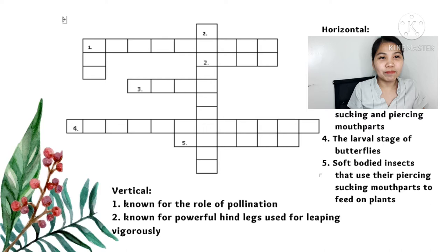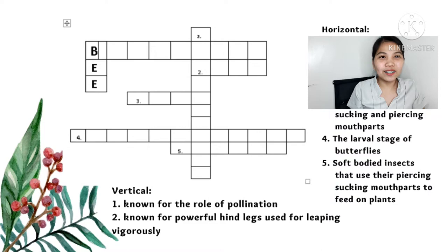You got it correct. Number 2: known for powerful hind leg used for lifting vigorously. That's correct — grasshopper. Let's go to the horizontal words.